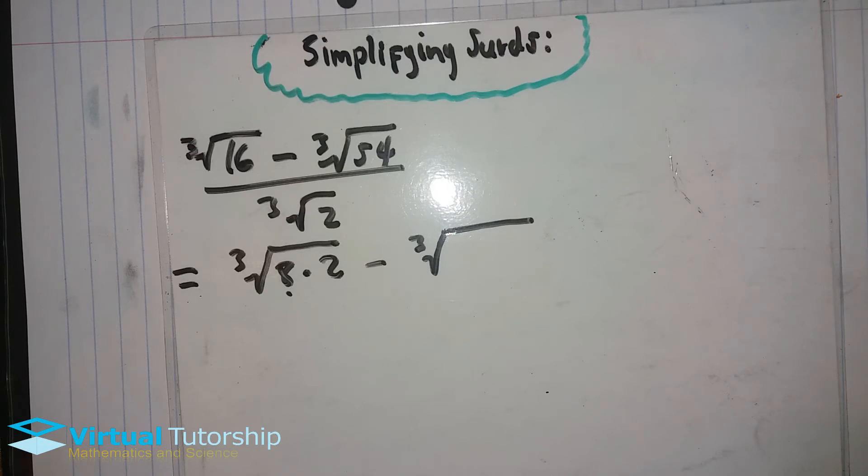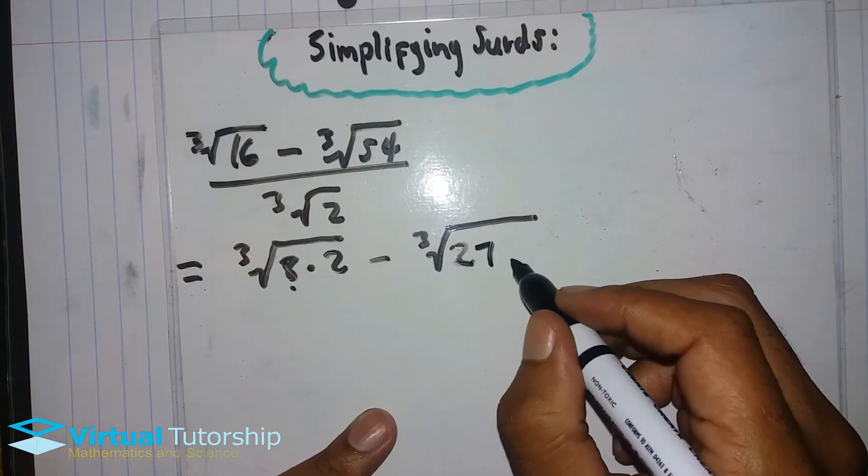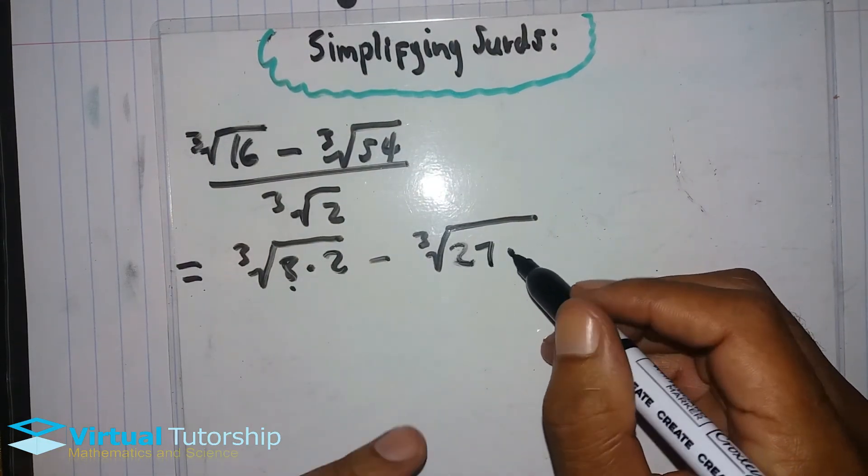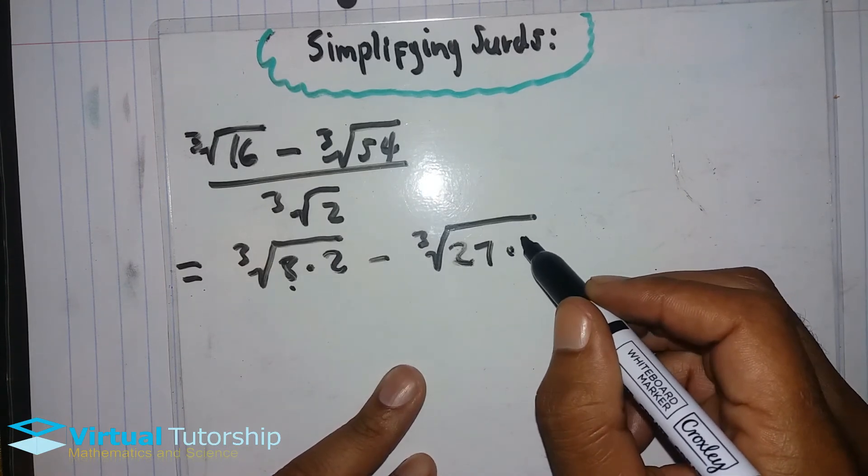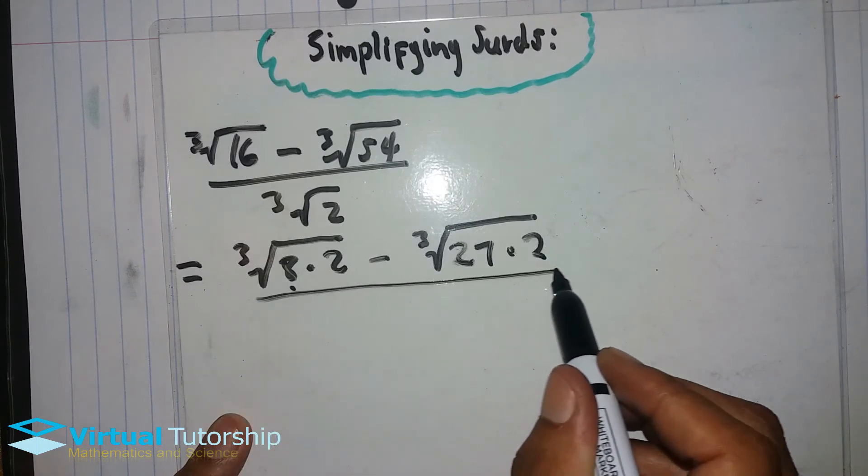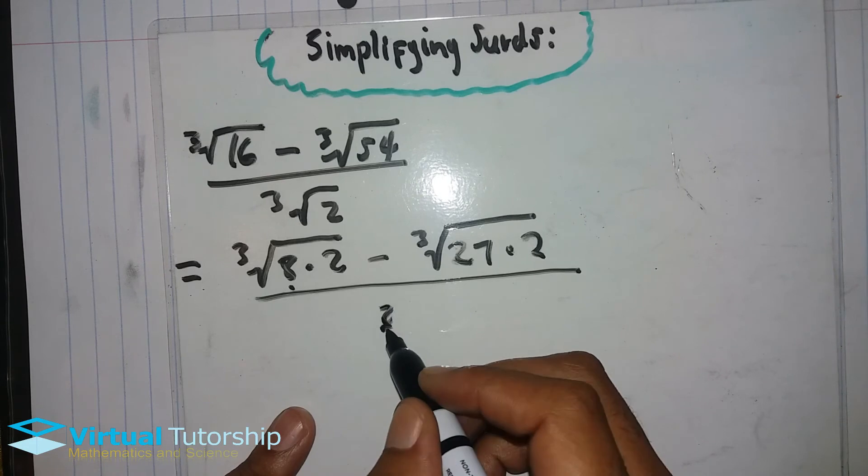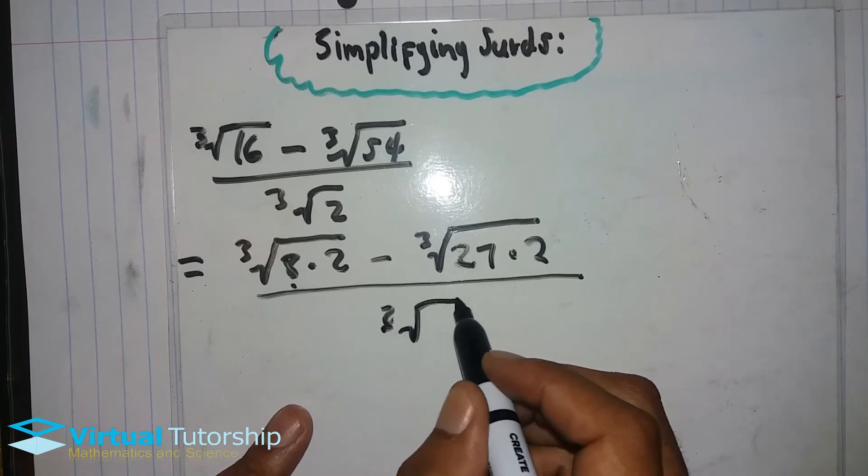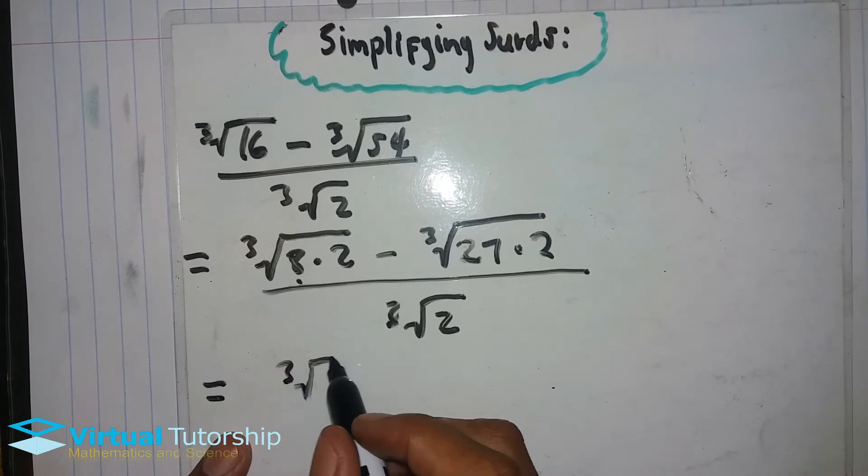54 divided by 2 is 27. 27 is a perfect cube.